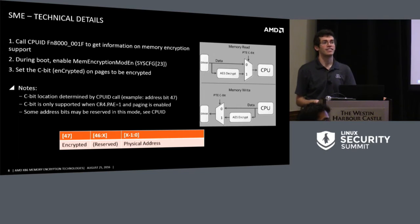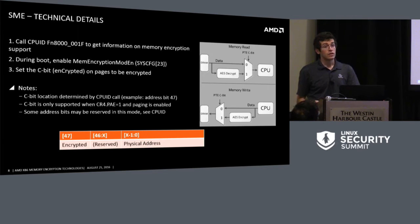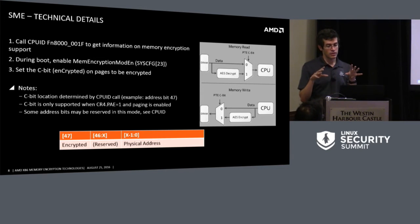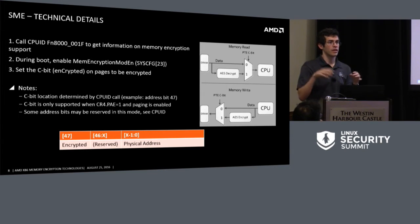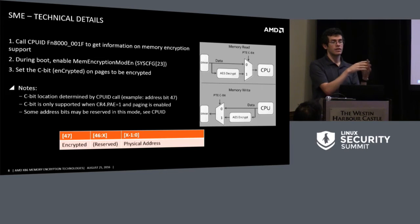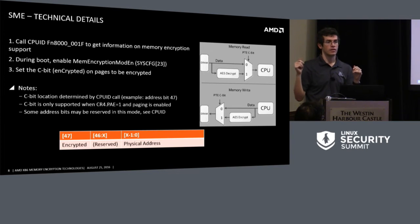Question: How does this work with multi-socket systems? Answer: It supports multi-socket since the system address space is consistent. In a multi-socket design there are multiple memory controllers and multiple AMD Secure Processors. There is a master one — like your bootstrap processor — that generates the key and sends it out to all the other memory controllers so they're all consistent.